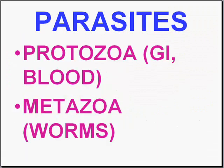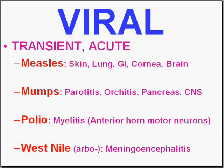We'll get back into parasites again a little bit, zero in on a couple of life cycles, and go into the protozoans and a couple of the worms. As promised, we're going to talk about four categories of viral diseases.